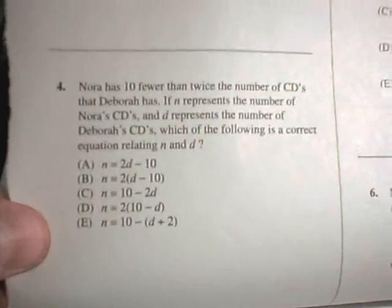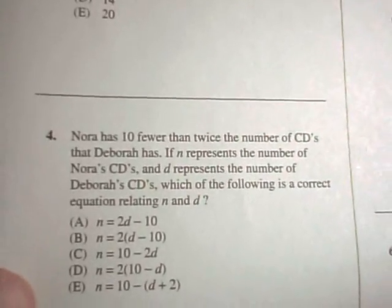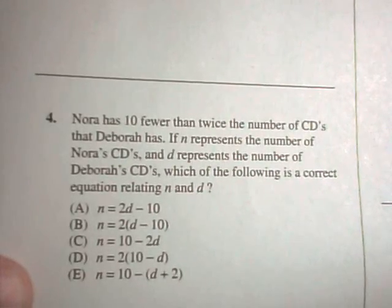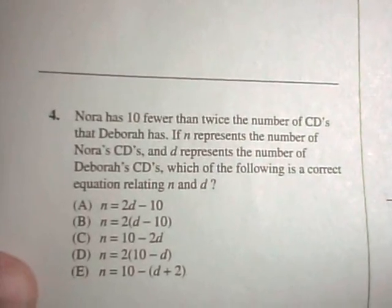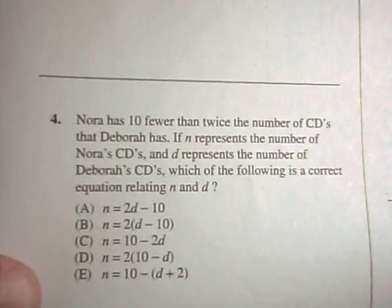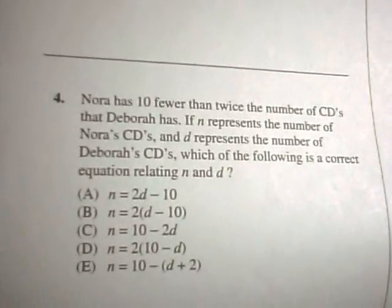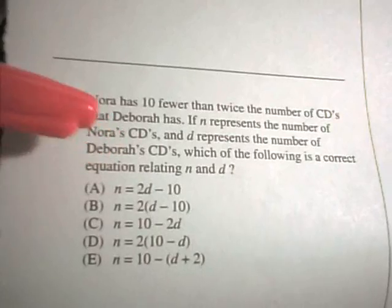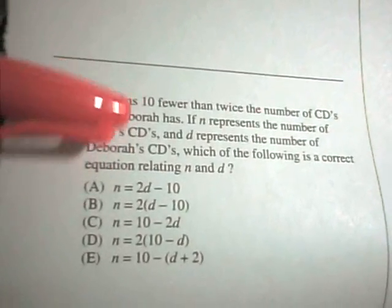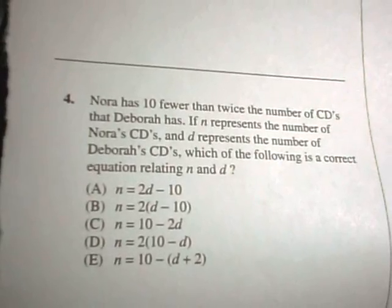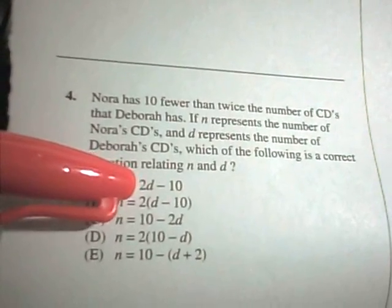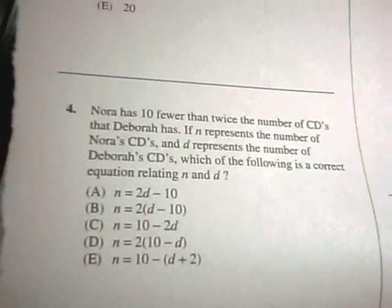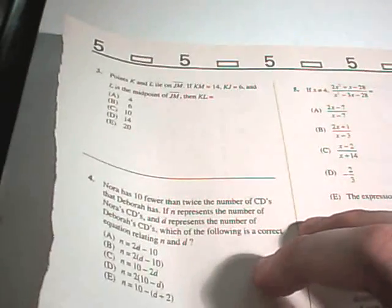It says, Nora has 10 fewer than twice the number of CDs that Deborah has. If n represents the number of Nora's CDs and d represents the number of Deborah's CDs, which of the following is a correct equation relating n and d? Well, to represent twice the number of CDs that Deborah has, that would just simply be 2 times d. And 10 fewer just means you would have to subtract 10 away. So, if we take twice the number that Deborah has and subtract 10, that's the number that Nora has. So, not a lot to do in this case, but A would be your answer.